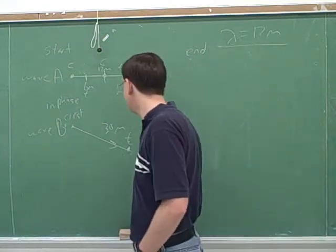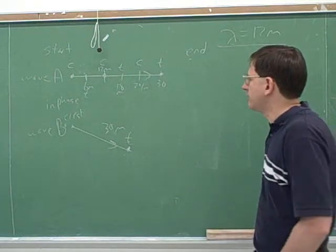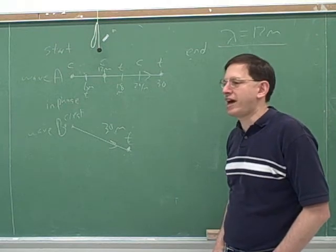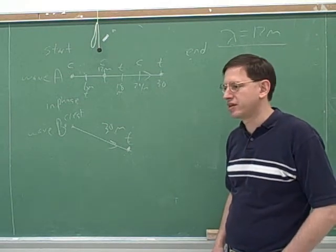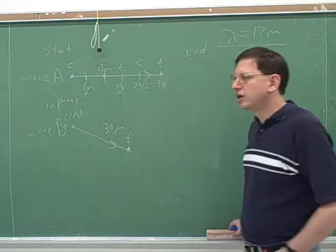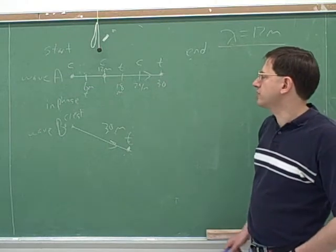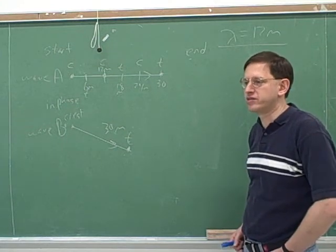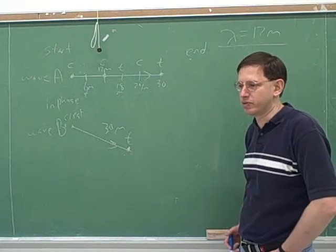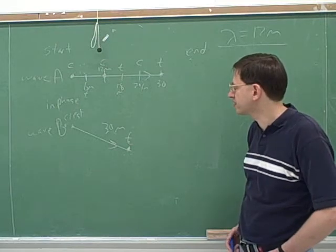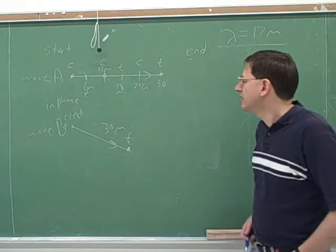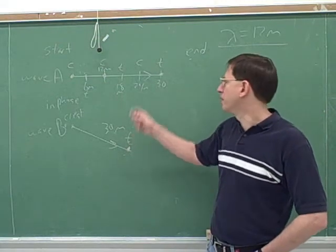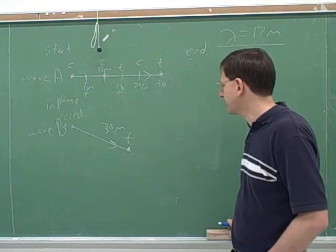Troughs. So the direction doesn't matter — this is the key idea. It's not the direction that they travel that matters, it's the path length. What matters is the path length. If you want to know what the phase relation is between two waves, you have to compare their path length, or focus on what we could call the path length difference. That's going to be the key concept we'll keep going back to today. In this case there is no path length difference, so they both ended up in phase with each other.